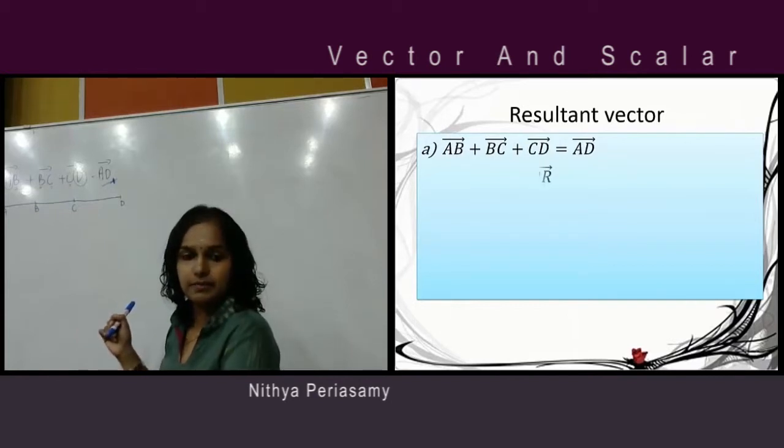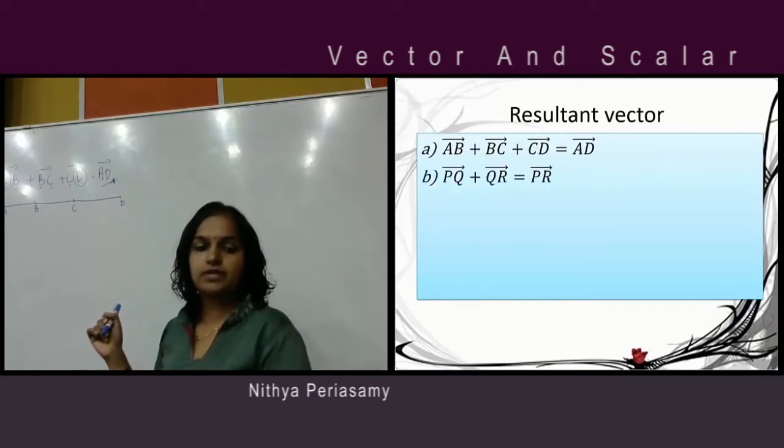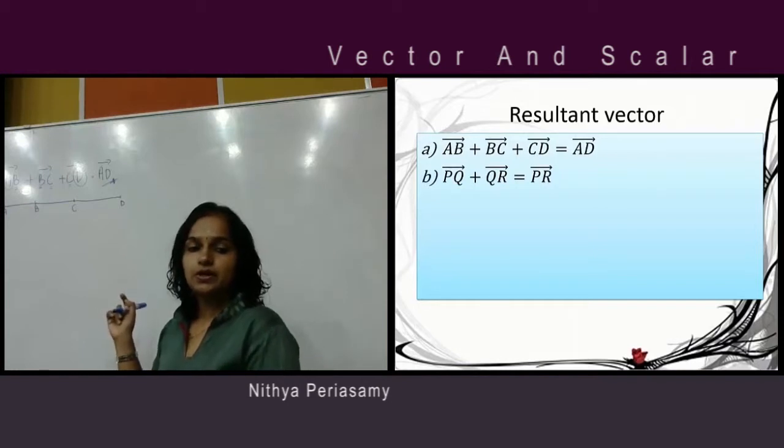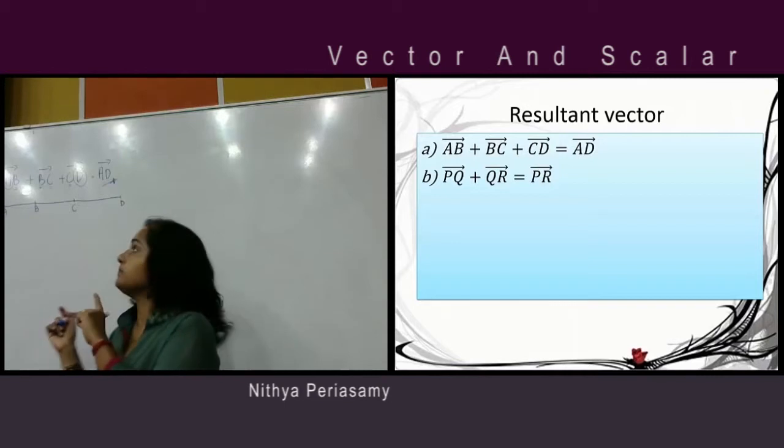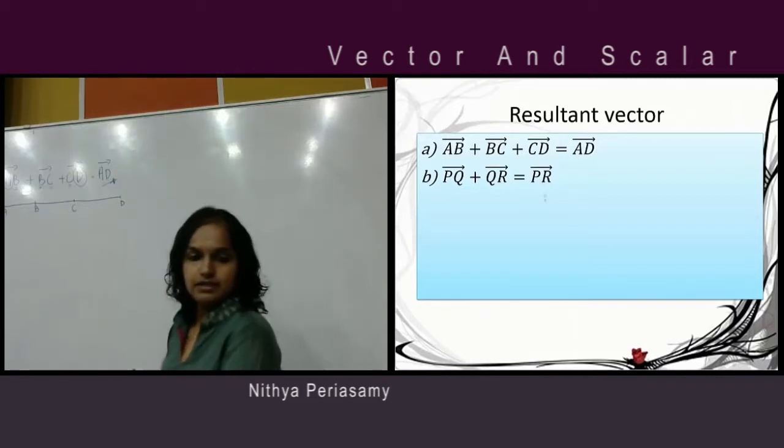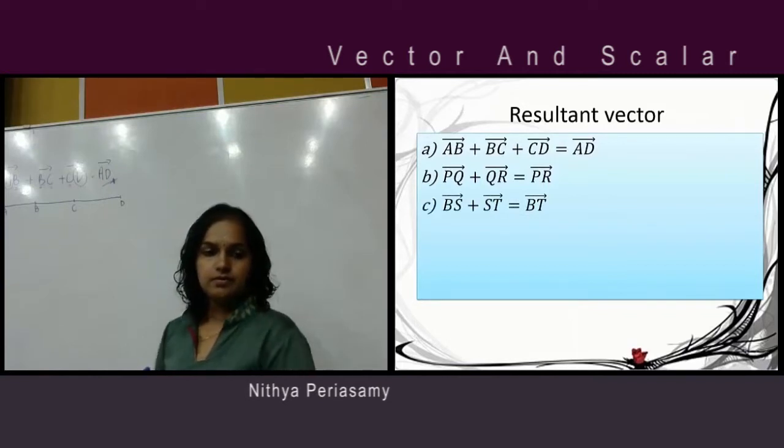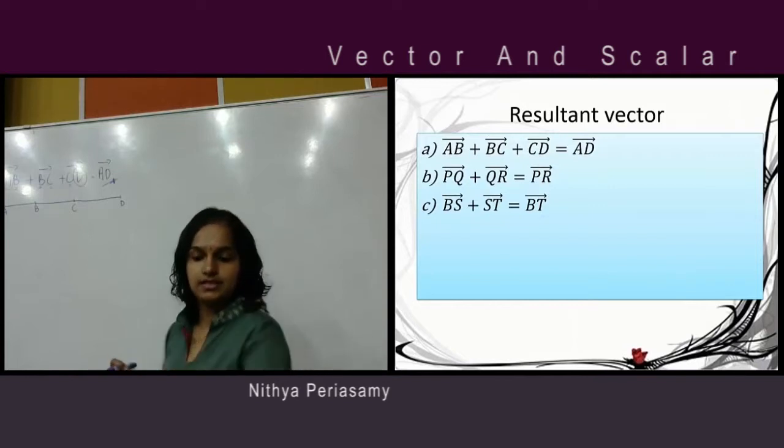Can or not class? Second example. So same thing. PQ plus with QR. You can see now, Q and Q, same. So that's why the answer is PR. Third one. BS plus with ST. You can see now, S and S, same. That's why you get the answer is BT.